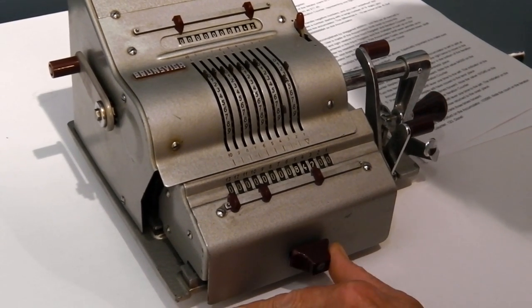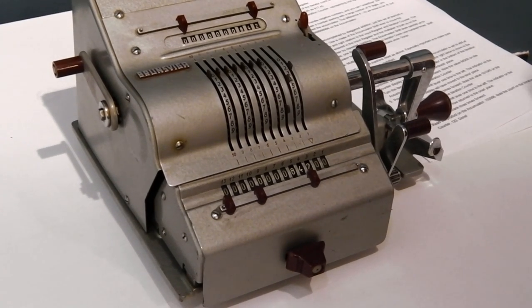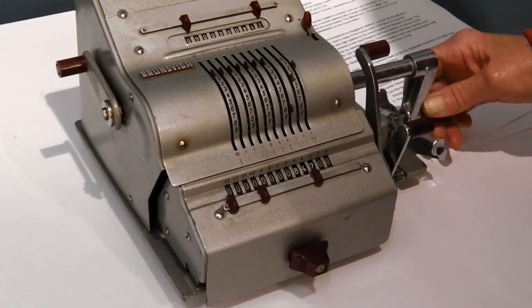Then we move it back to the left one so that we're in the tens column and we're going to multiply by 20 so that's two turns of the hand.